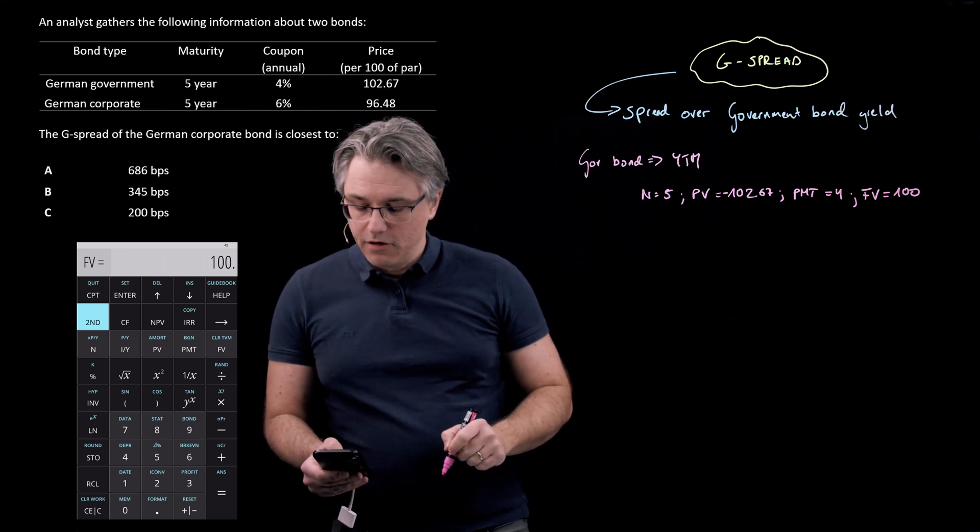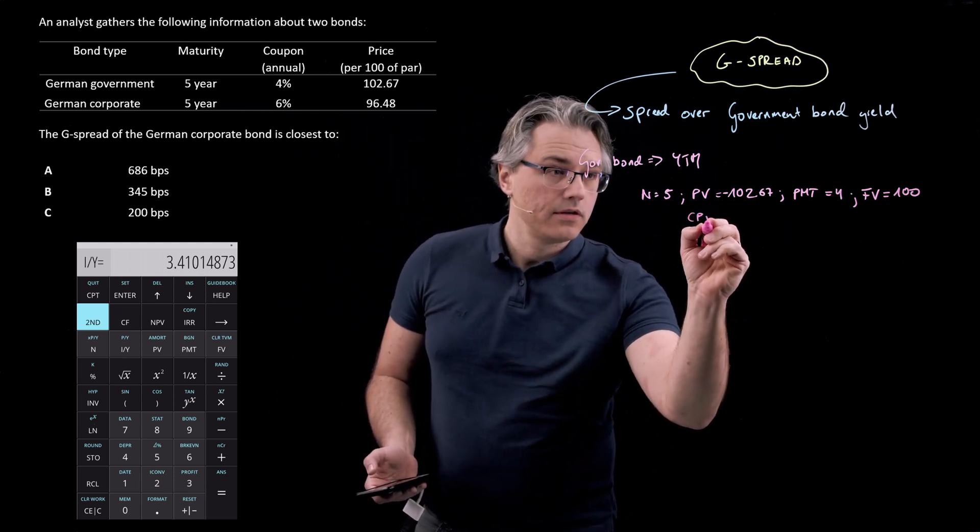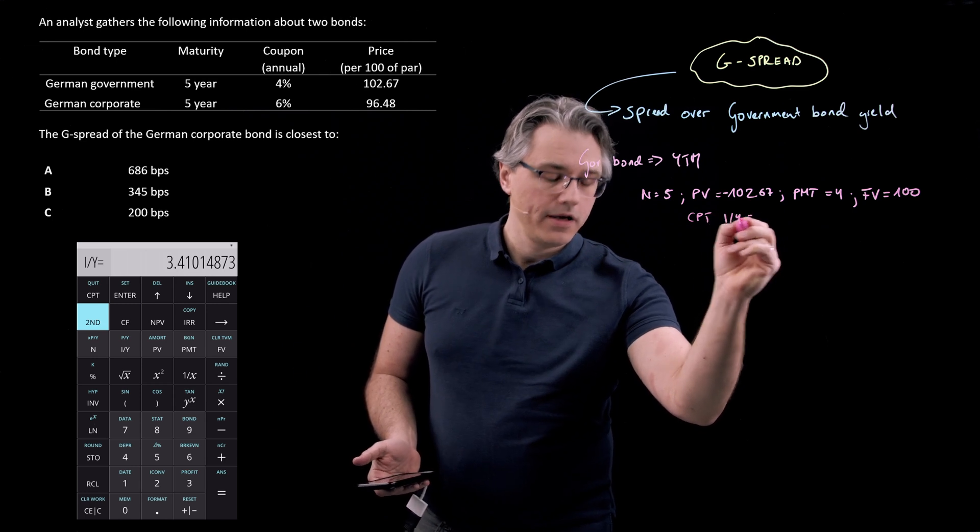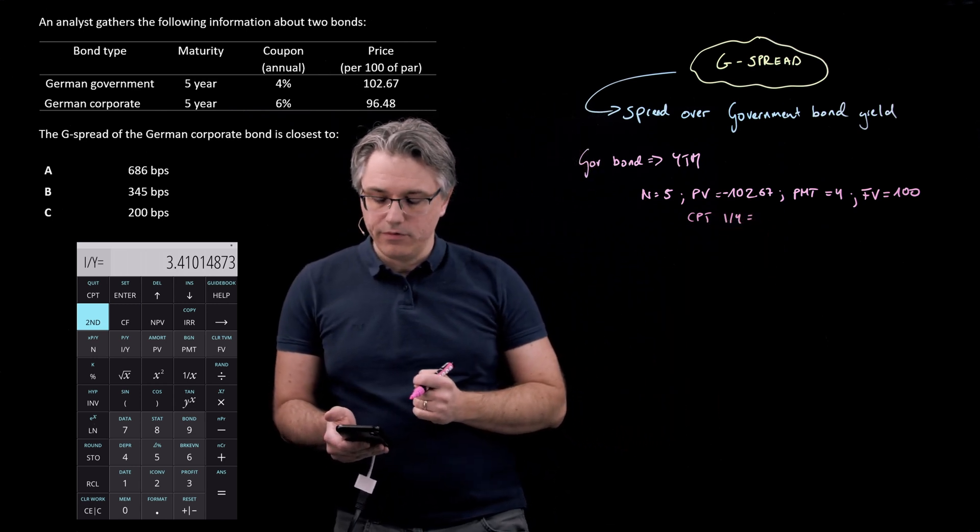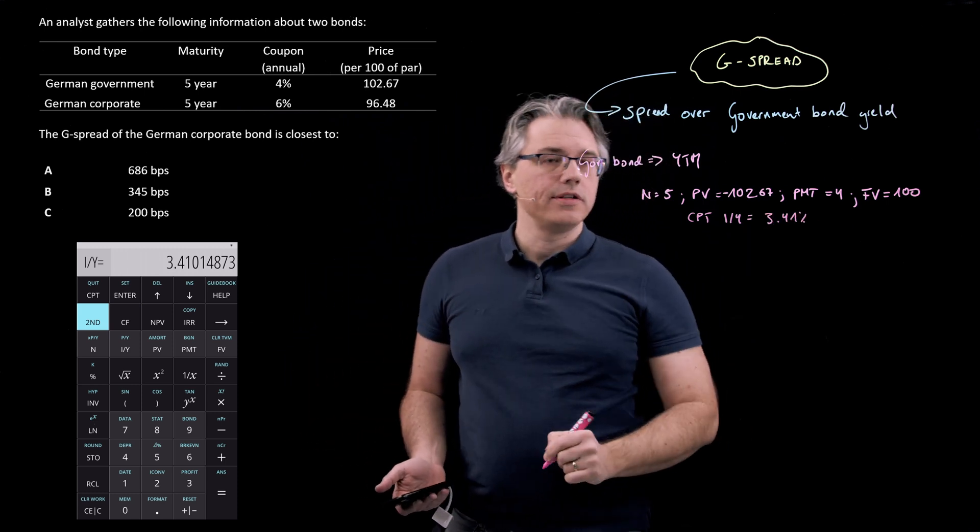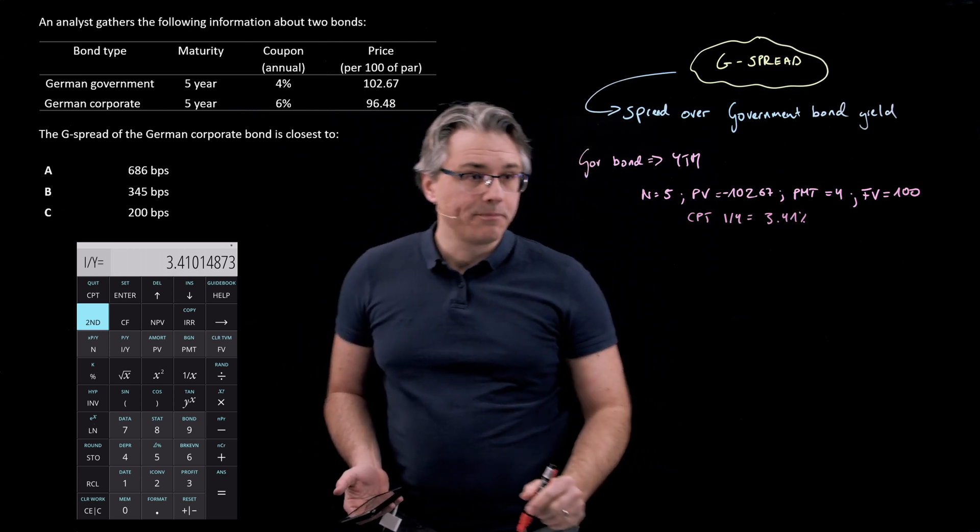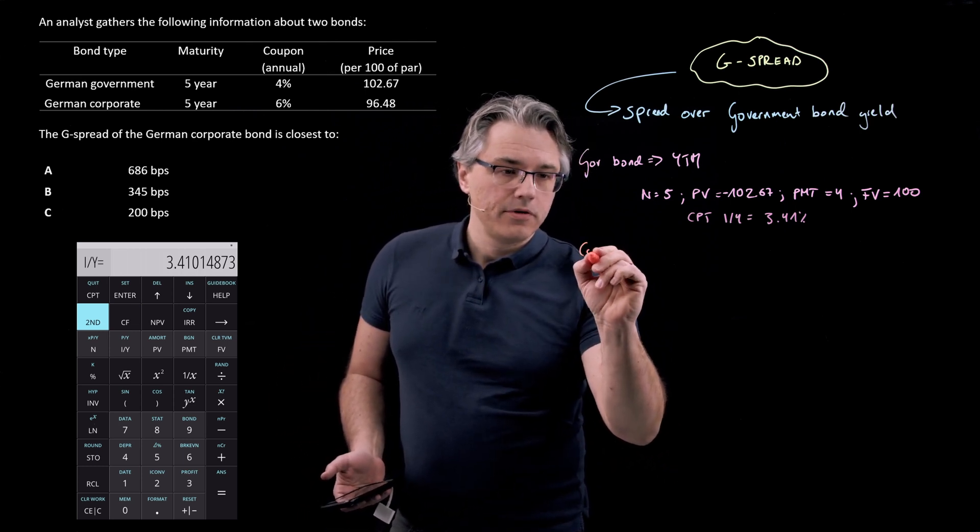So I think I've got everything in place. Let me now compute for I over Y. So CPT compute I over Y, and this yields a result of 3.41% roughly. So that's the yield to maturity on the government bond. Let's repeat the same steps for the corporate bond.